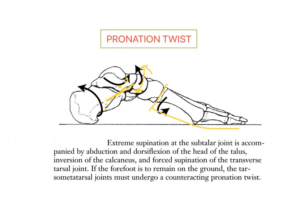These forces pass through the remaining distal joints and cause the forefoot on the medial side to lift up, while the lateral side is placed on the ground. This results in an extreme position — inversion of the forefoot is taking place.